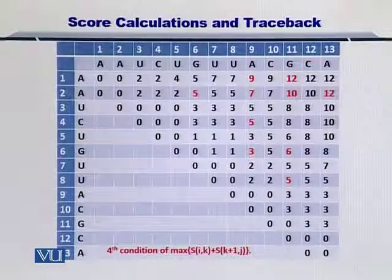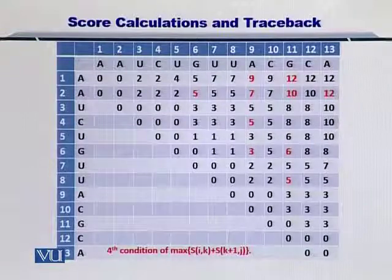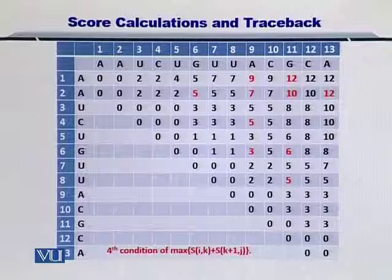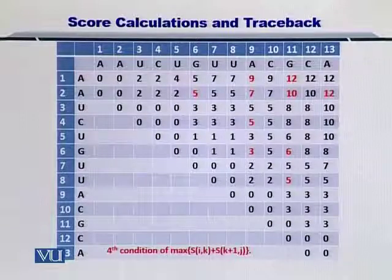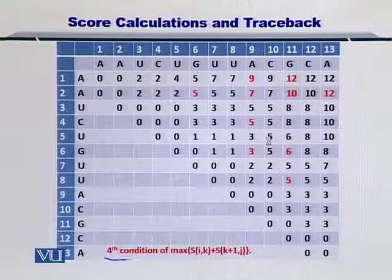As you can see in this matrix, we have filled up all the positions with scores that resulted by looking at the left bottom diagonal as well as the bottom column and the left row. The text in red shows contributions that have come from the fourth condition here.